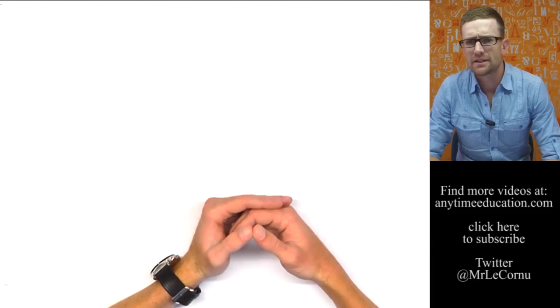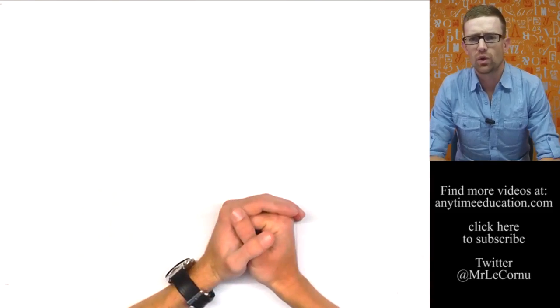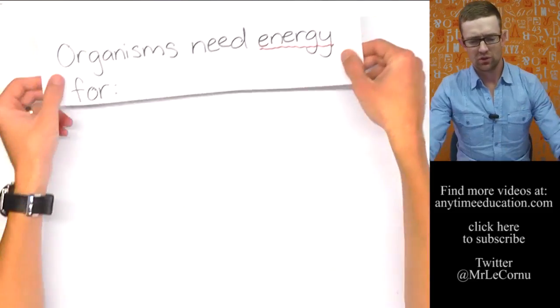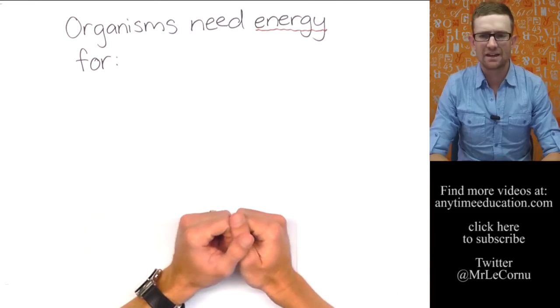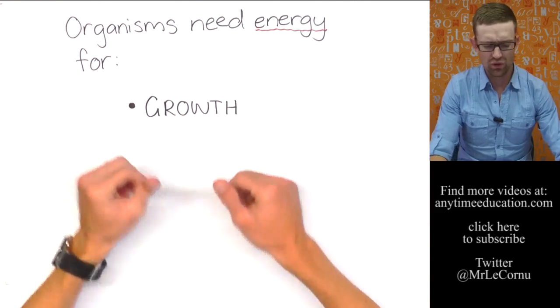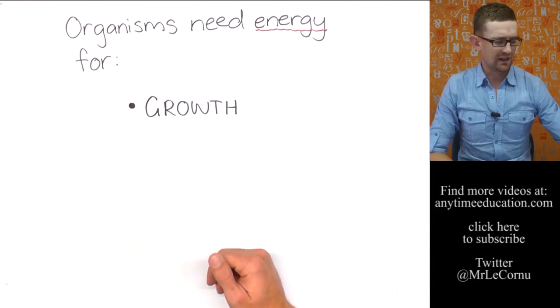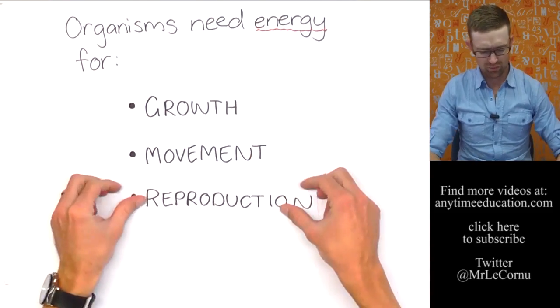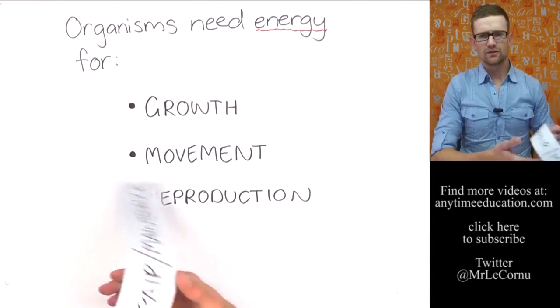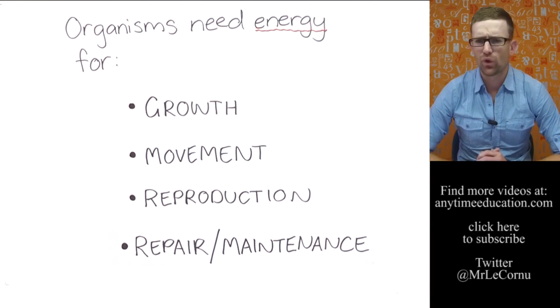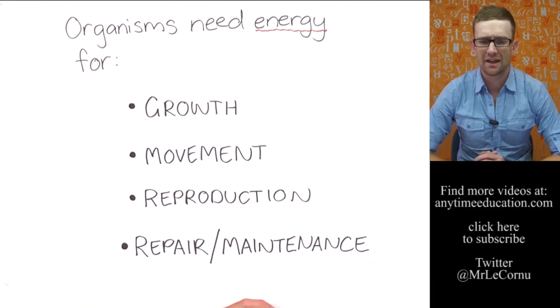It's the type of work for different living things or different levels of living things that we're going to have a look at. But that's our simple description. Energy is the capacity to do work. So if energy is the capacity to do work, what sort of work are we talking about? Well, let's look at living things, first of all, organisms. What do organisms need energy for? Well, organisms need energy for growth. They need energy for movement.